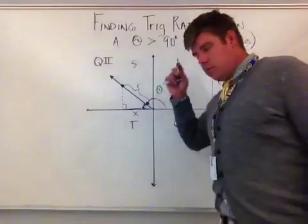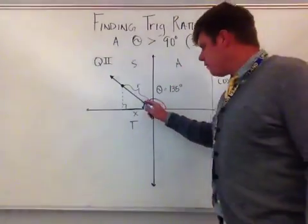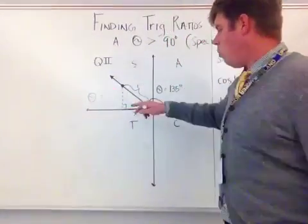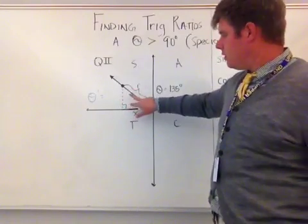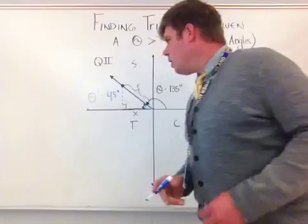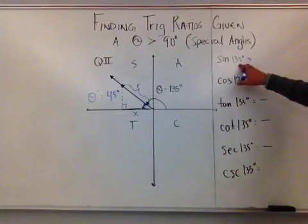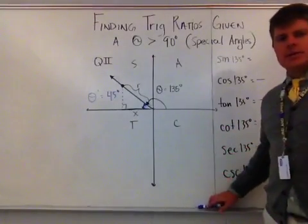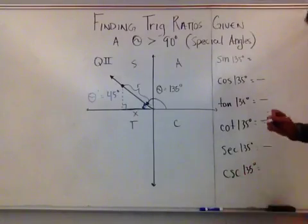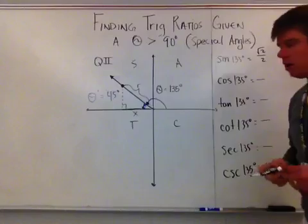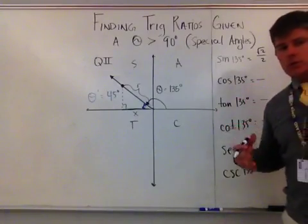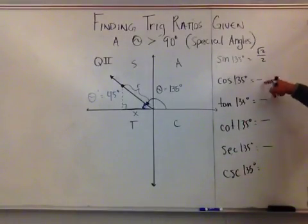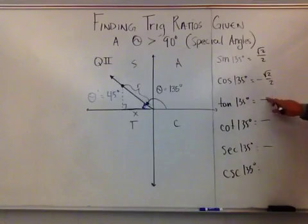We call the reference angle theta prime. So theta prime equals 180 degrees minus 135 degrees, which gives us 45 degrees. Now instead of thinking about cosine of 135, I think of it as sine or cosine of 45 degrees. The sine of 135 equals the sine of 45 degrees, which is root 2 over 2. The cosine of 135 equals the negative of the cosine of 45 degrees — cosine of 45 is root 2 over 2, so with the negative already assigned, it's negative root 2 over 2.